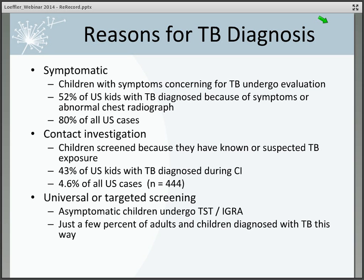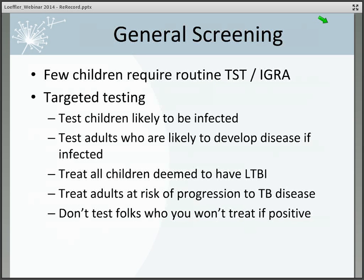Not an inconsequential number — 444 adults were diagnosed per year with TB disease during contact investigation, so it's still worth doing. But if you work on contact investigations, the statistic of almost tenfold more kids being diagnosed gives you impetus to be really aggressive in screening those little kids. The final category is universal or targeted screening — evaluating asymptomatic people because they have TB exposure or disease risks — but just a few percent of both adults and children are diagnosed this way.